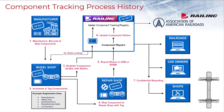Railinc finalized the major system functionality to support component tracking in October of 2011. Beginning in February 2012, manufacturers began to place new standard barcodes on components. These barcodes contain detailed information regarding the specifications of the wheel, axle, or bearing. By July 2012, all wheel shops began to utilize these barcodes to gather the details of wheels, axles, and bearings that are assembled into a single wheelset. The wheel shops apply a unique AAR component identifier to each wheelset and report the details related to the assembled wheelset to Railinc.